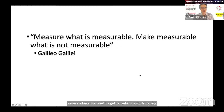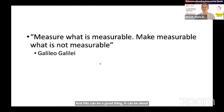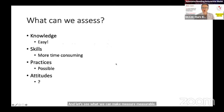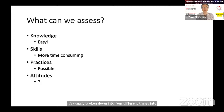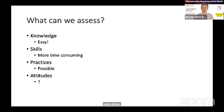At this point I'll go back to physics and look at what Galileo said: measure what is measurable, and make measurable what is not. When looking at assessment, we're basically trying to turn things into numbers and measurement — which can be a good thing or a bad thing. If we break down what we can assess, it's usually broken down into four things: knowledge, skills, practices, and attitudes. A lot of testing is testing knowledge — finding out whether our students know a particular piece of information.